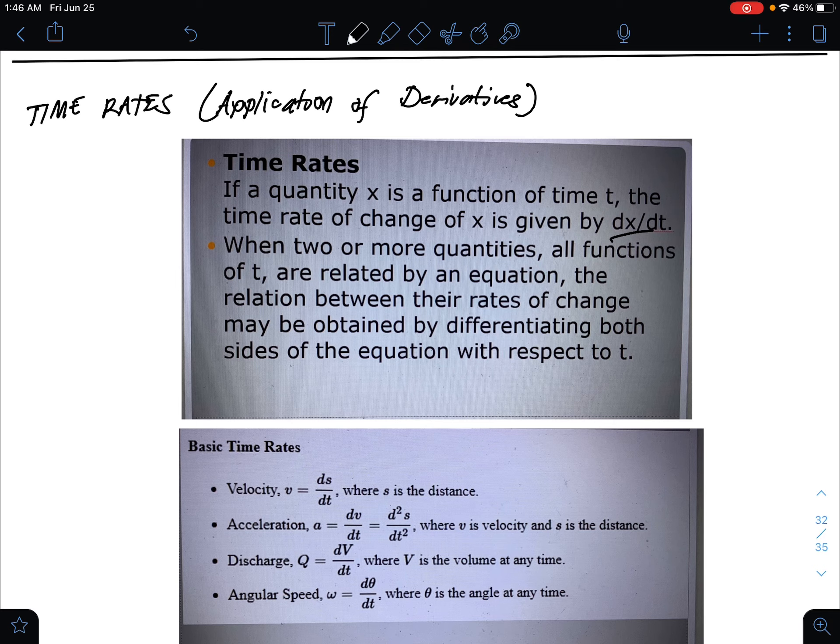When two or more quantities, which are all functions of t, are related by an equation, the relation between the rates of change may be obtained by differentiating both sides of the equation with respect to t.